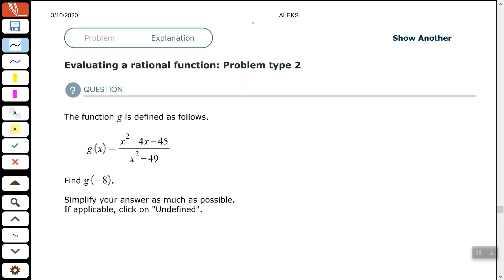Okay, so this one we're going to evaluate this rational function. The function g is defined as follows: g(x) = (x² + 4x - 45)/(x² - 49).